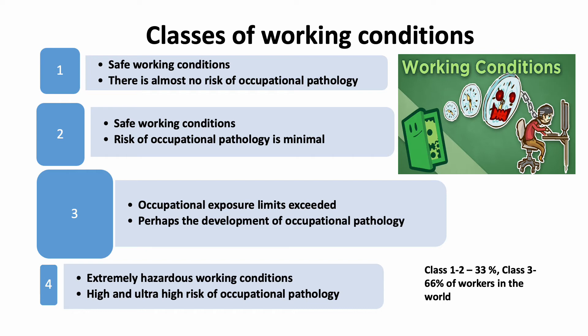There are four classes of working conditions. The first is safe working conditions — there is almost no risk of occupational pathology. The second is also safe working conditions — the risk of occupational pathology is minimal. The third class means occupational exposure limits are exceeded and there is a risk of development of occupational pathology. The last class is extremely hazardous working conditions with high and ultra-high risk of occupational pathology. Almost 66% of employees work in the third class of working conditions.